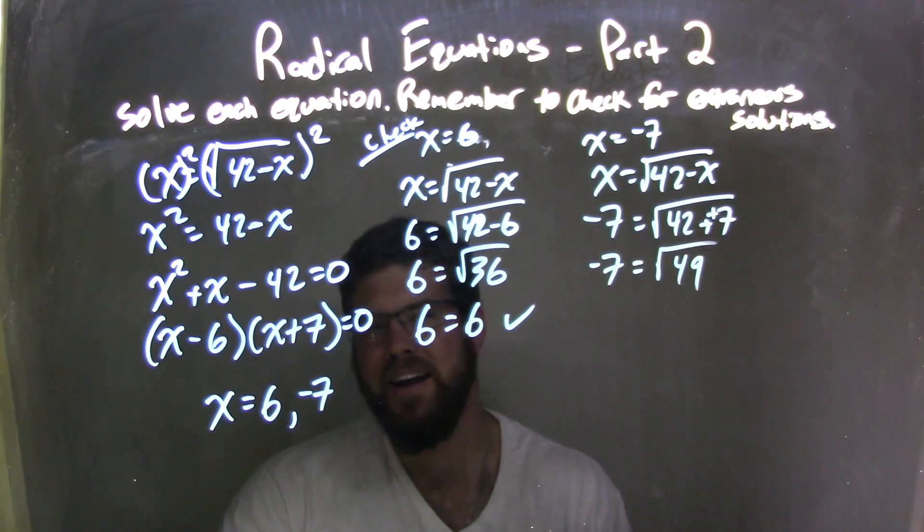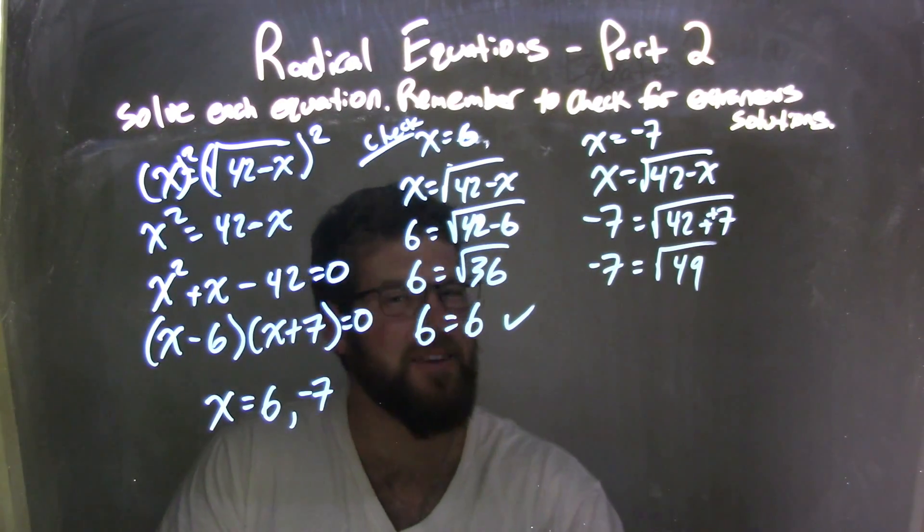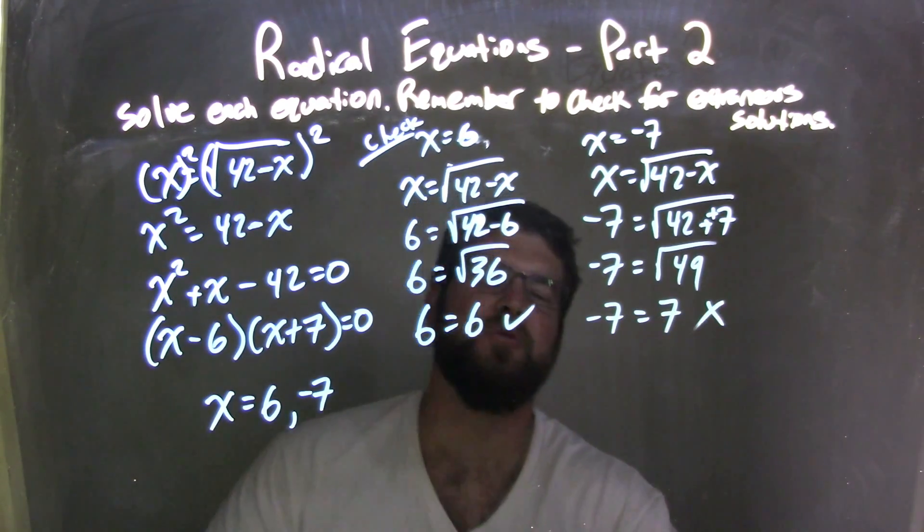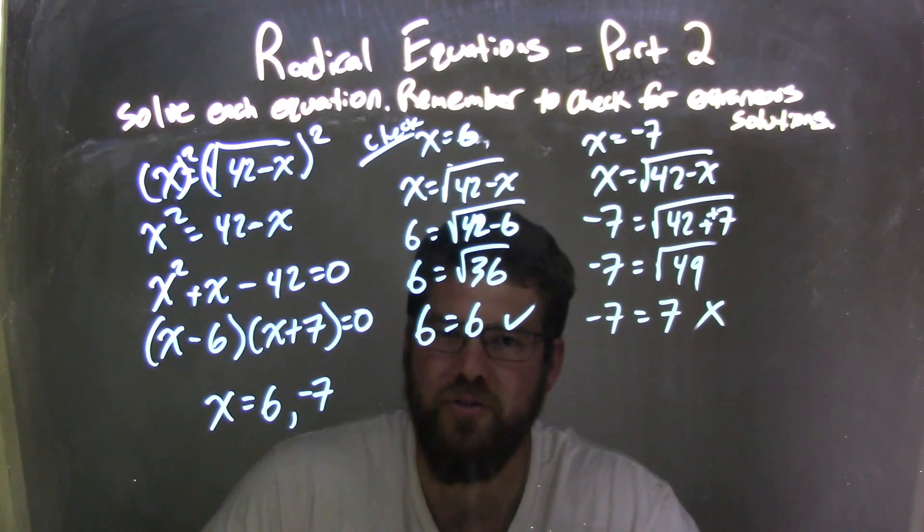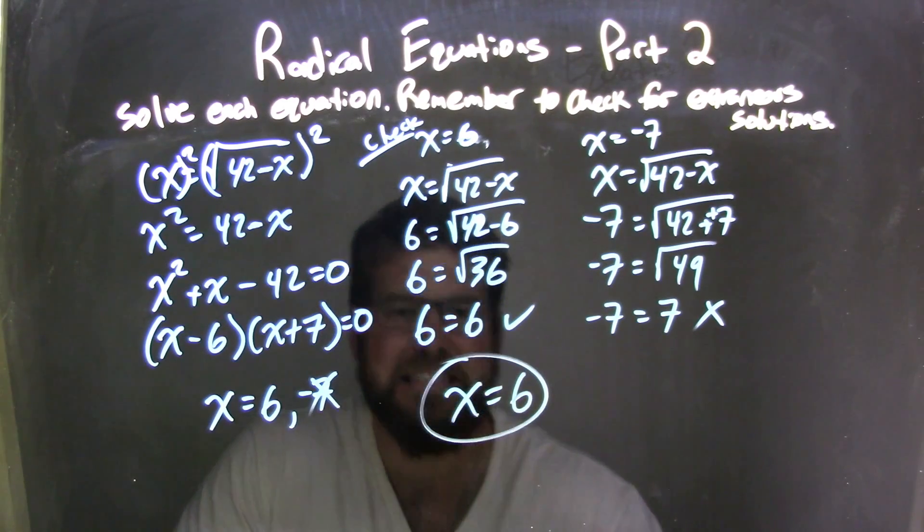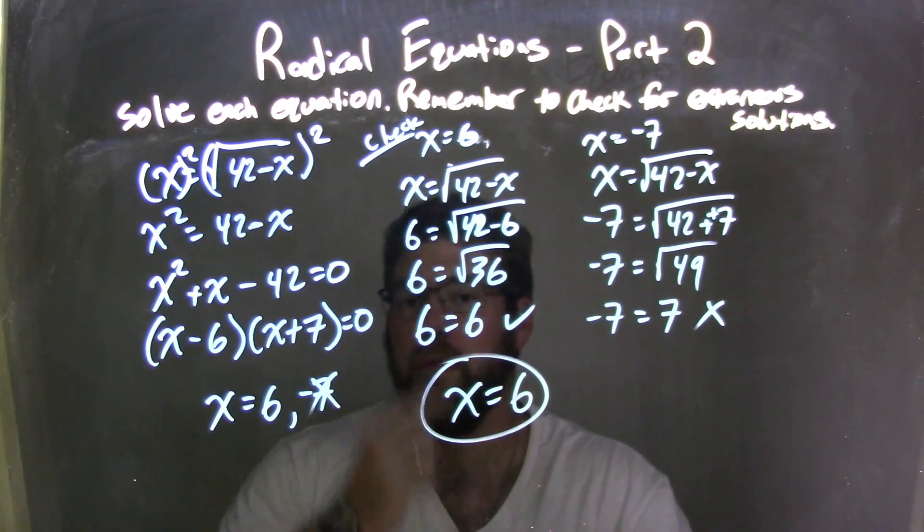The square root of 49 is 7, so we have negative 7 equals positive 7. That is not a true solution—that is extraneous. So our only real answer here is x equals positive 6.